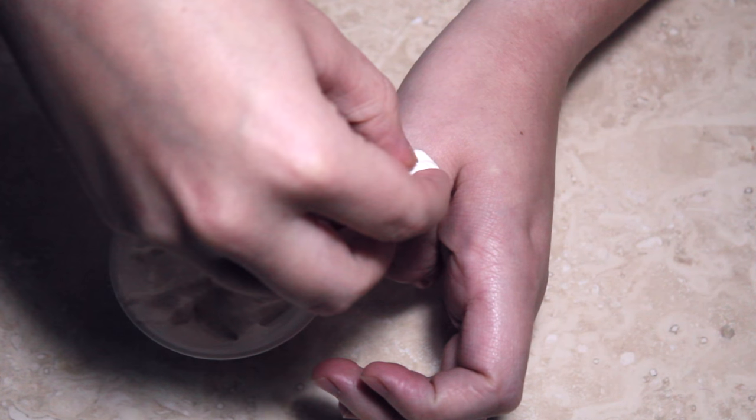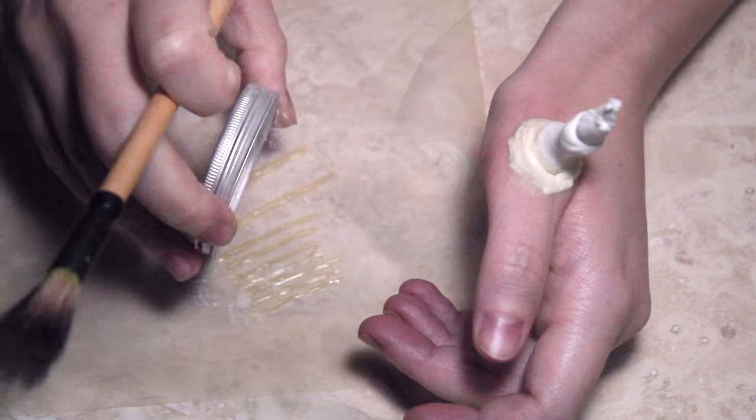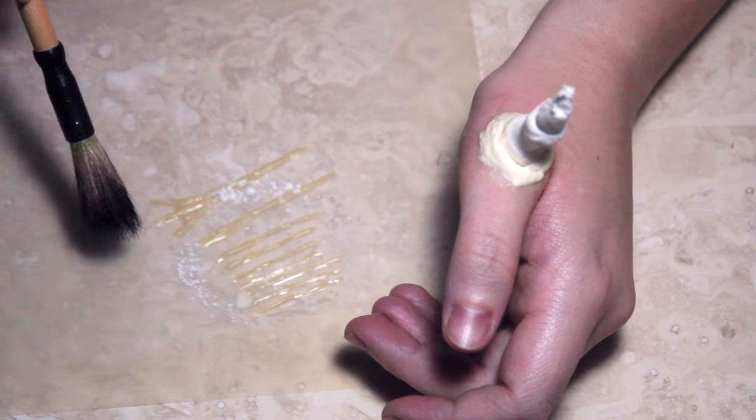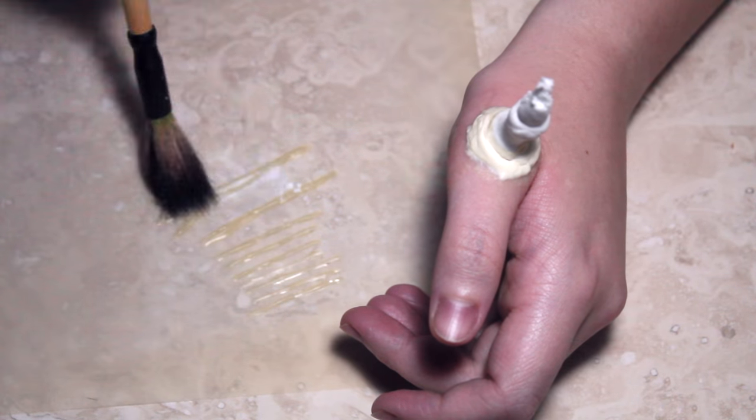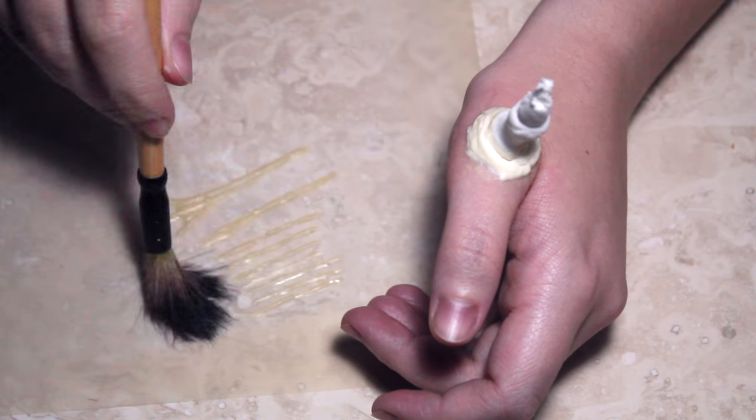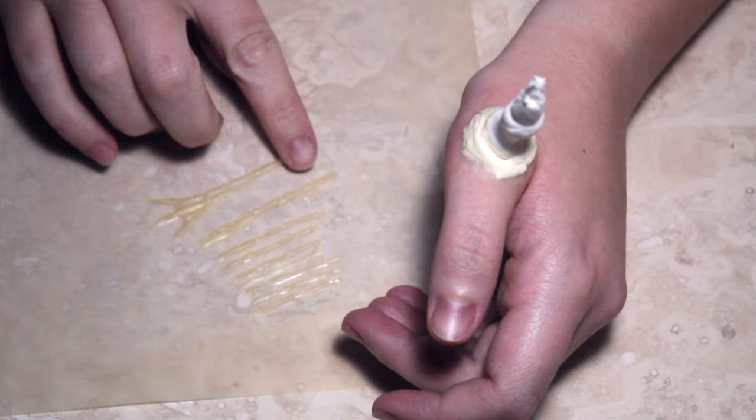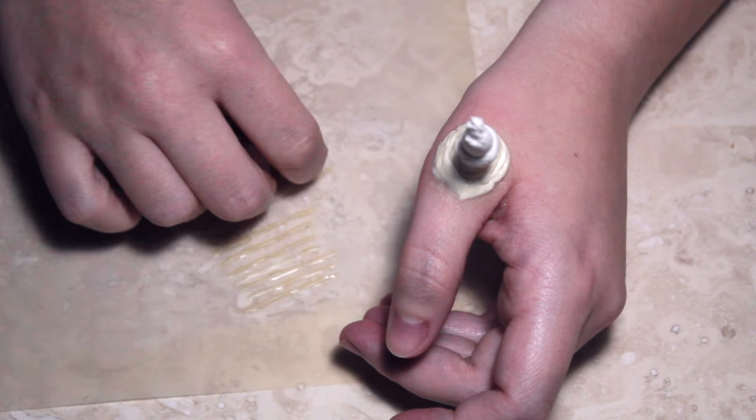This part is going to take a while especially the more latex there is at the bottom the longer it's going to take. So if you want to have quite a thick base try and do it in layers and wait for each layer to dry. Now while I'm waiting for this to dry I'm going to dust some powder over those latex strips that I've done.